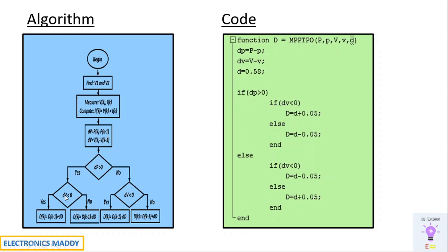The duty ratio d is initialized to 0.58. If dP > 0 and dV < 0, d is increased by 0.05. If the main condition is not met, it goes to the else block: if dV < 0, d = d - 0.05; otherwise d = d + 0.05. The step size of 0.05 can be adjusted based on your system requirements.